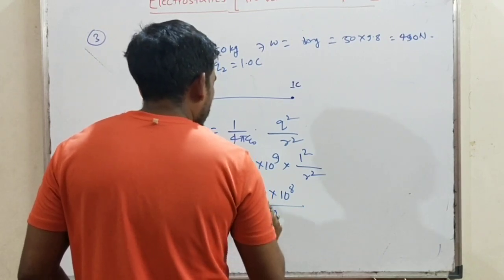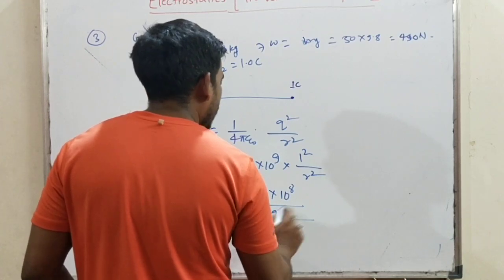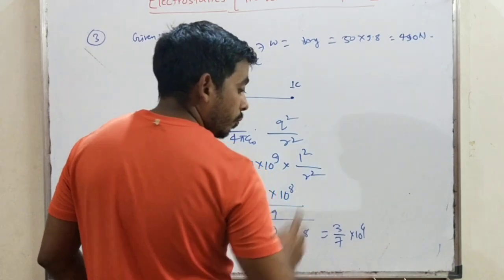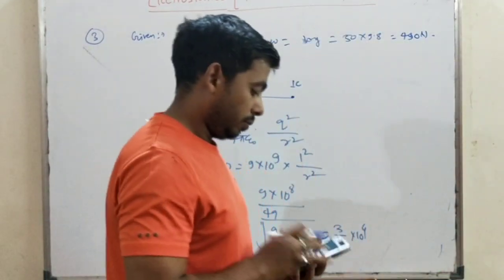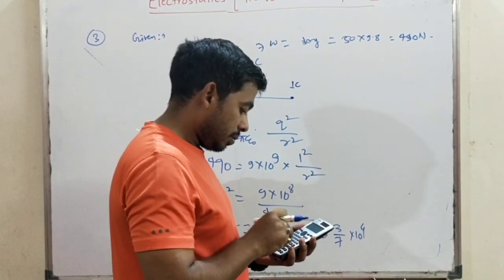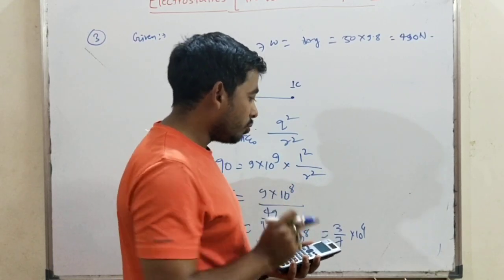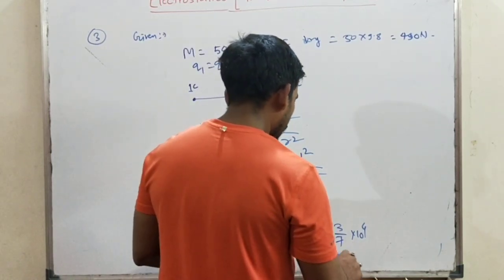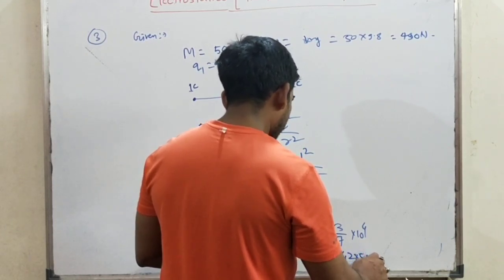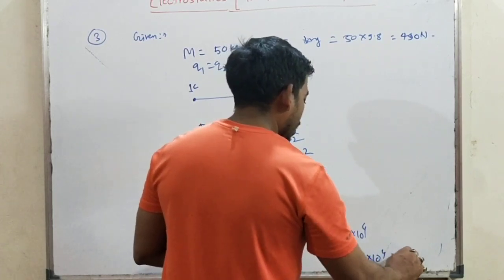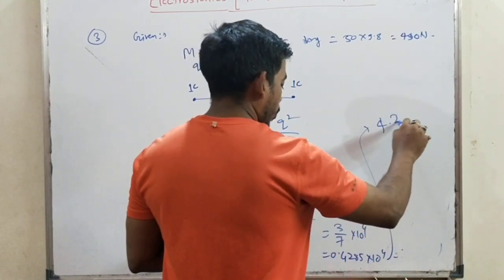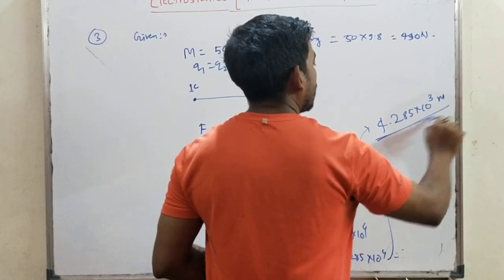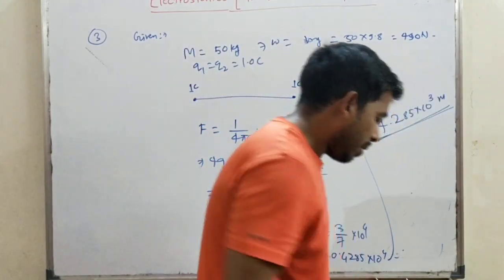r = √(9/49 × 10⁸). Solving: r ≈ 0.4285 × 10⁴ = 4.2 × 10³ meter, which is approximately 4.2 km. So the two charges must be placed 4.2 km apart.